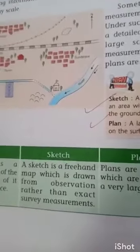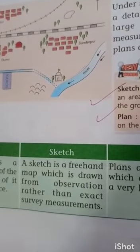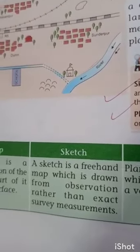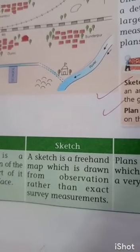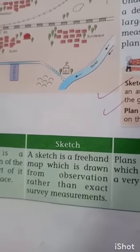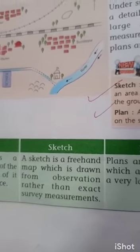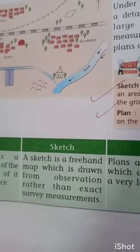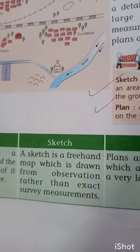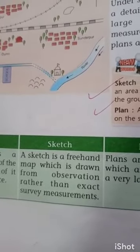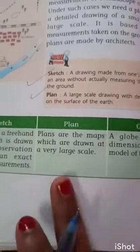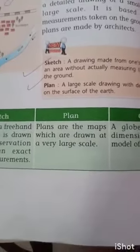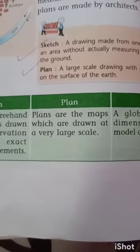What is a sketch? A sketch is a freehand map drawn from observation rather than survey with precise measurement — it is not drawn to any scale. What is a plan? Plans are maps drawn at a very large scale, based on accurate measurements taken on the ground, and are basically made by architects.